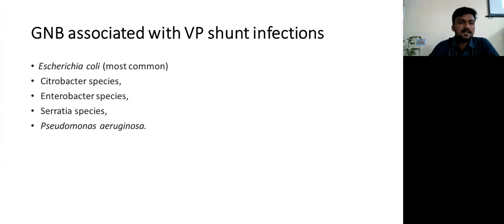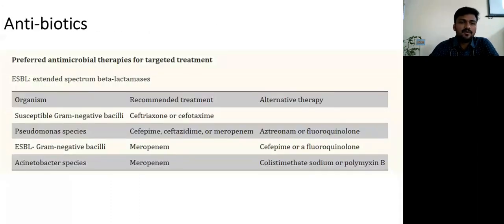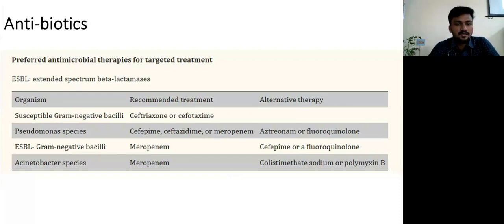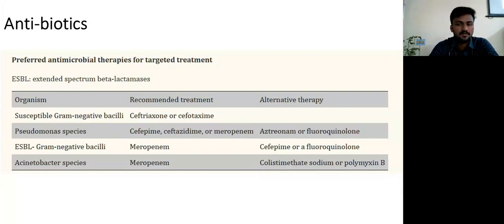Gram-negative bacteria associated with VP shunt infection: the most common was E. coli, followed by Citrobacter and Enterobacter species, Serratia species, and Pseudomonas aeruginosa. For antimicrobial therapy, susceptible Gram-negative bacilli can be treated with ceftriaxone. For Pseudomonas species, ceftazidime or meropenem are preferred; fluoroquinolones including ciprofloxacin can also be considered to de-escalate as early as possible. For ESBL or Acinetobacter, meropenem is the antibiotic of choice.